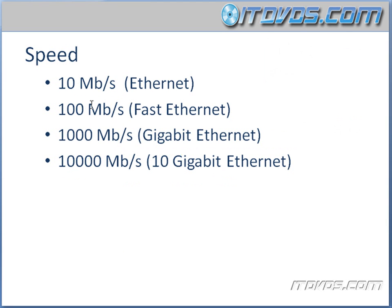Now let's talk about speeds. We've got 10 megabits per second, also known as Ethernet. 100 megabits per second — and it's important that this is a little 'b' here, we're talking about bits per second, not bytes per second — so 100 megabits per second is Fast Ethernet. 1,000 megabits per second is Gigabit Ethernet, and 10,000 megabits per second is 10 Gigabit Ethernet. In order to run at a certain speed, both the network interface card and the cable have to be able to support that speed.